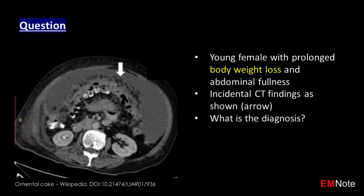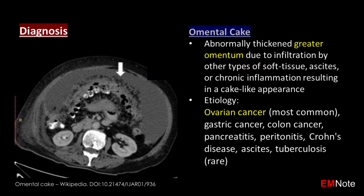This young female presents with prolonged body weight loss and abdominal fullness. Incidental CT findings are shown. The diagnosis is omental cake, which refers to CT images showing abnormally thickened greater omentum due to infiltration by other types of soft tissue, ascites, or chronic inflammation resulting in a cake-like appearance.